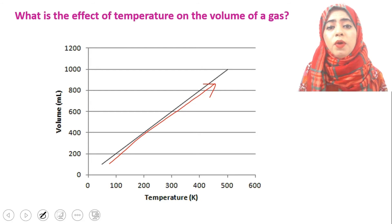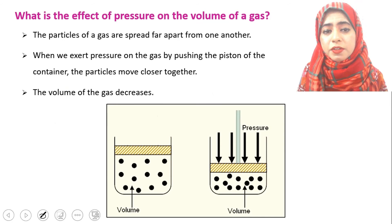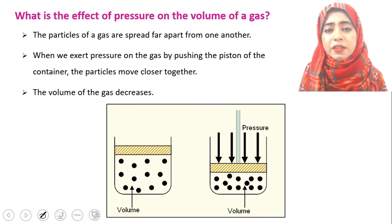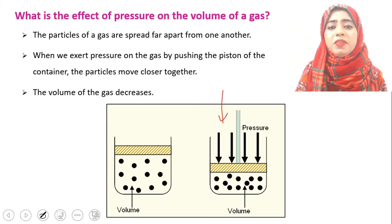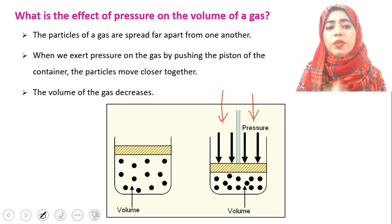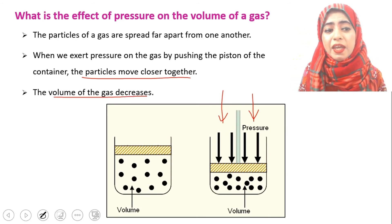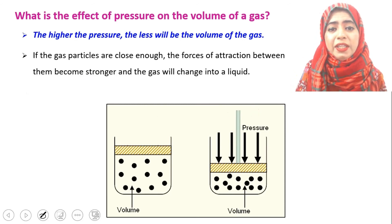Now, what will happen to the volume of the gas if we increase the pressure? Let's say we have a gas in a container and we start applying pressure by pushing the piston. The particles of the gas will start moving closer to each other, and when they become closer, their volume will decrease and they will have more attraction with each other.